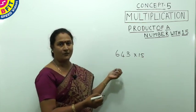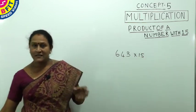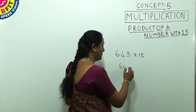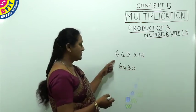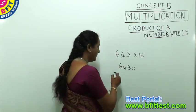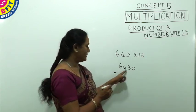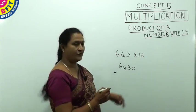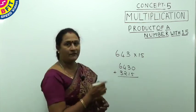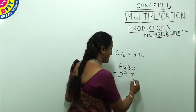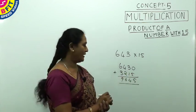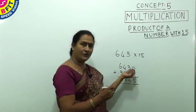Instead of multiplying by 5, then by 1, and adding, we can easily get the product by adding a 0 to the given number. So for 643 × 15, put a 0 with the given number to get 6430, then add half of 6430, which is 3215. This sum gives you the product: 643 × 15 = 9645.